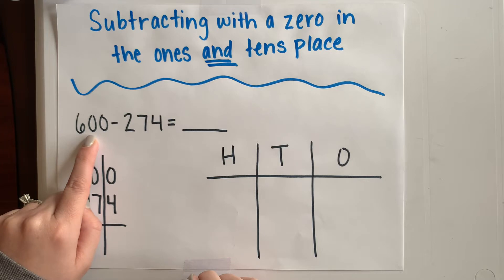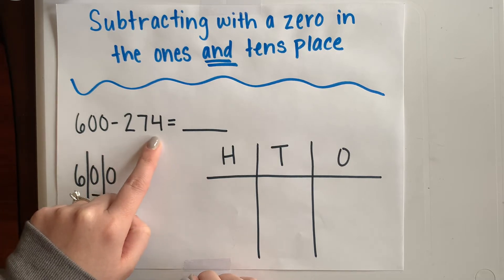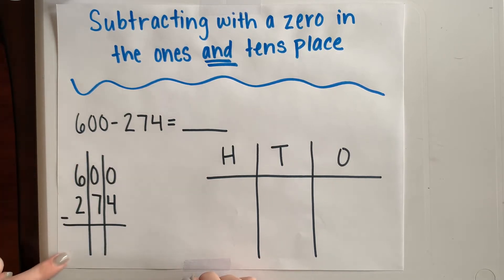My equation is 600 minus 274. I've already set my problem up vertically and I've also drawn my place value drawing, or my PVD, because that's the strategy that I'm going to use to solve this problem.